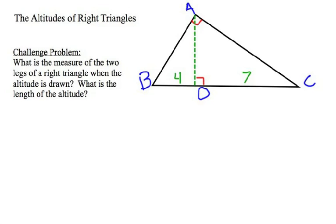So, I'm going to call the altitude X. We're going to be solving for that. I'm going to call one leg, AB, Y, and I'm going to use the variable Z for the other leg, AC.